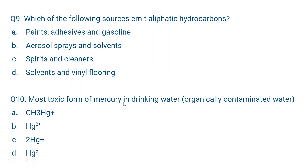Question number ten: What is the most toxic form of mercury in drinking water? The question specifies organically contaminated water. The answer is CH₃Hg⁺ — that is methyl mercury. The other options include mercurous form (Hg₂²⁺), Hg²⁺, and nascent mercury. Methyl mercury is the most toxic form of mercury in drinking water. The hint in the question is 'organically contaminated water' — where there is an organic group, it is methyl mercury. This is the correct answer.